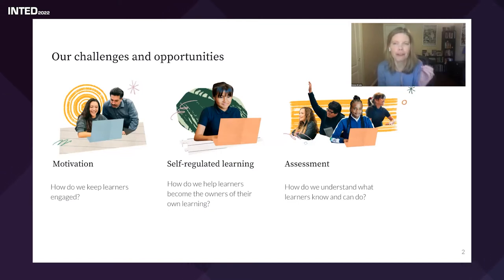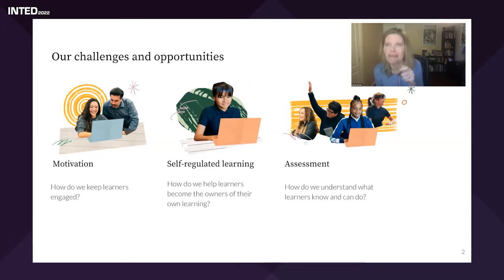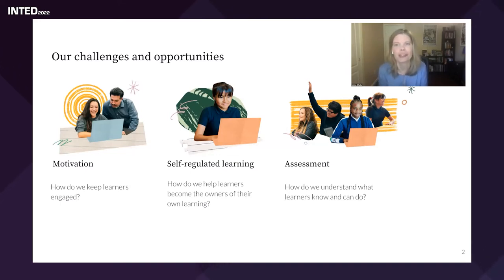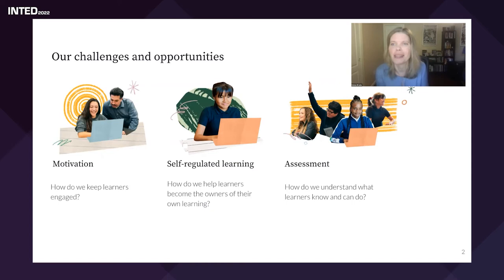The first is motivation — how do we keep learners engaged in digital environments. Second, self-regulated learning — that's a bit of education jargon, but basically it's how do we help learners become the owners of their own learning. And third, assessment — how do we understand what learners know and can do, particularly in digital environments. I'm going to cover each of those three things today, sharing what I've learned from years of working in digital learning environments and what the research says.